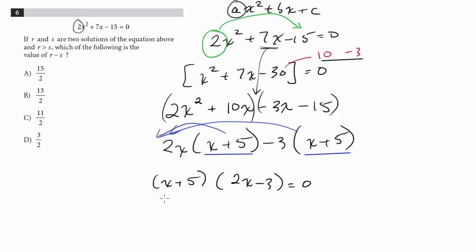And now we just finish up the problem. So now x plus 5 equals 0 and 2x minus 3 equals 0. So x is negative 5, and x would be 3 halves.